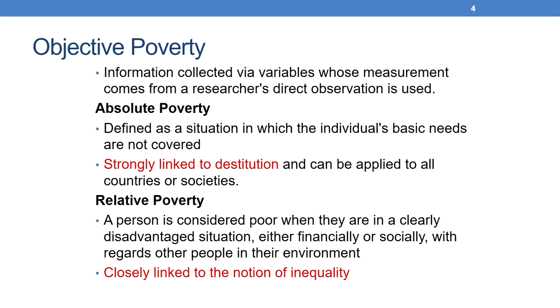Absolute poverty is defined as a situation in which an individual's basic needs are not covered — in other words, there is a lack of basic goods and services. This normally relates to very basic needs such as food, clothing and shelter, though the list of basic needs keeps on expanding over time. Issues related to housing, electricity, sanitation and drinking water have remained constant over a long period. Absolute poverty is strongly linked to destitution and can be applied to all countries or all societies.